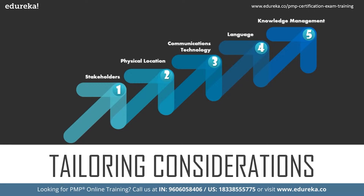Stakeholder identification is not a one-time job; it has to happen throughout the project lifecycle. Their communication requirements must be understood — including physical location, communication requirements, technology and platforms needed, the language, and the knowledge management required for communication. The maturity level of each individual in a specific domain must be considered, so that the communication aligns to that level.